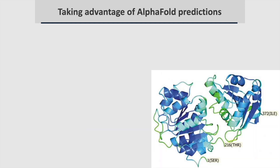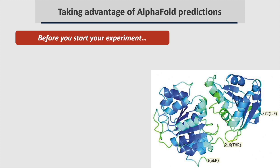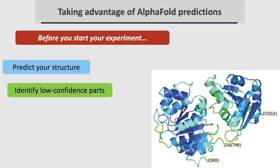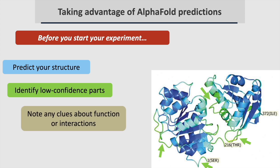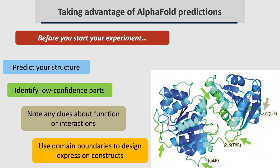You can take advantage of AlphaFold models at every stage in Structure Determination. Before you even start your experiment, predict your structure as part of your planning. Note which parts have lower confidence, shown in green in this figure. Your AlphaFold prediction may give you clues about how your system works, or about what parts of your molecule to keep to obtain soluble expression.